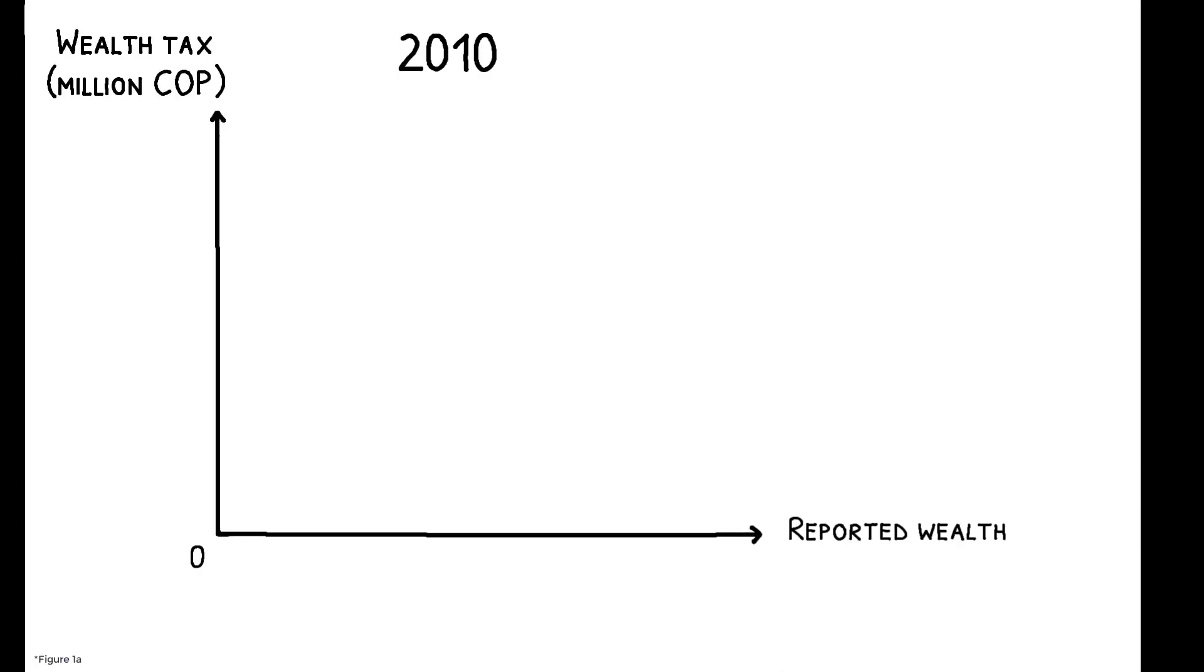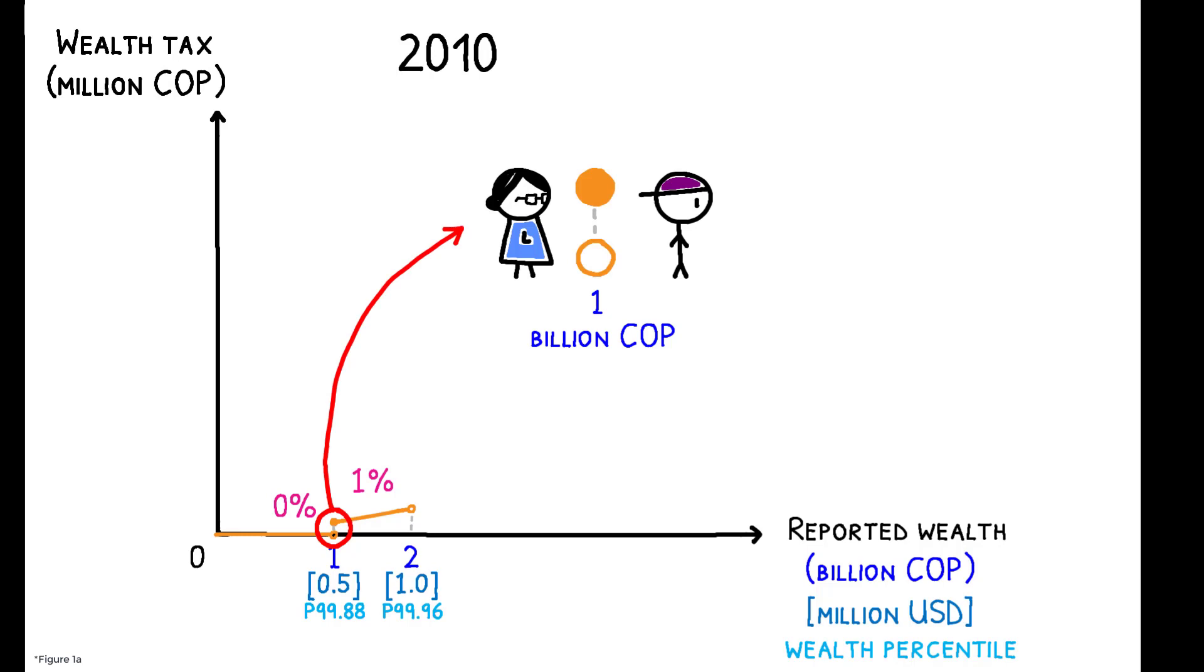This figure shows the wealth tax structure in 2010. In that year, all individuals with reported net worth below 1 billion pesos owed no tax, while those with net worth between 1 and 2 billion pesos owed a 1% tax. This means that while a taxpayer just to the left of the cutoff owed nothing, a taxpayer reporting just one additional peso owed taxes of over $5,200 U.S. dollars.